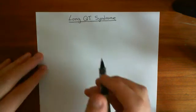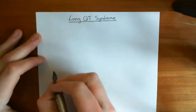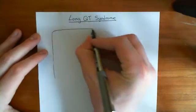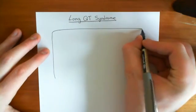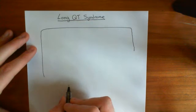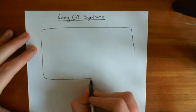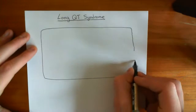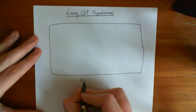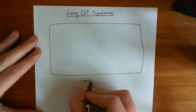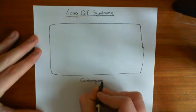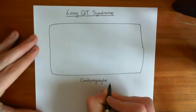Let's start off with the healthy cardiac action potential. So here is a cardiomyocyte — this is a healthy cardiomyocyte. And we're going to see how the action potential across the membrane of a cardiomyocyte actually works.